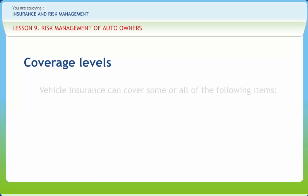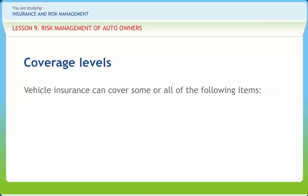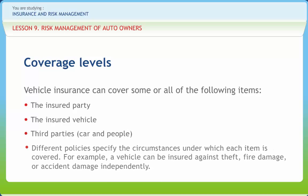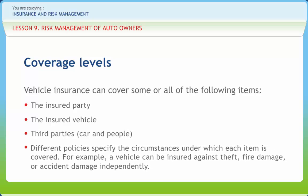Vehicle insurance can cover some or all of the following items: the insured party, the insured vehicle, and third parties' car and people. Different policies specify the circumstances under which each item is covered. For example, a vehicle can be insured against theft, fire damage, or accident damage independently.